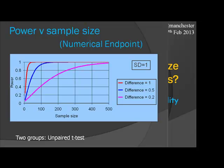Here's an example of a power curve, to show how power works. This is a simple t-test comparing one group with another on a continuous variable, with a standard deviation of one. With very large differences compared to the standard deviation you get lots of power with very small numbers — it approaches 100% but never quite reaches it. As you look at smaller and smaller differences, the power you have to detect those differences goes down, or the sample size you need goes up.